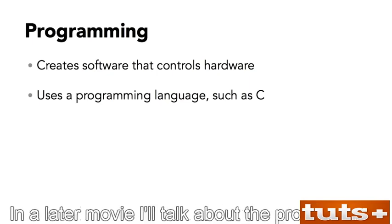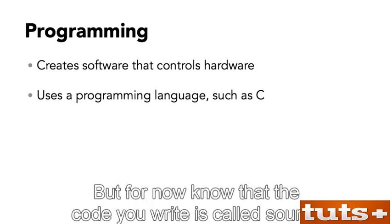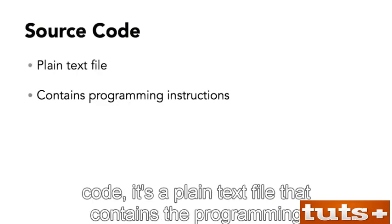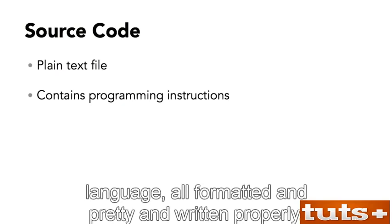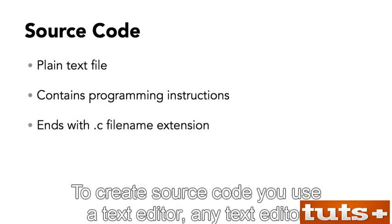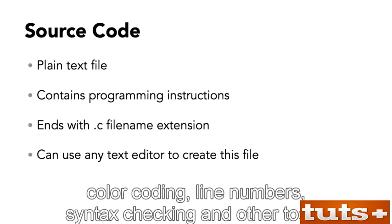In a later movie, I'll talk about the programming language's syntax and other rules. But for now, know that the code you write is called source code. It's a plain text file that contains the programming language, all formatted and written properly. The file is saved with a .c file name extension. To create source code, you use a text editor. Any text editor can do, although some editors offer helpful features like color coding, line numbers, syntax checking, and other tools.